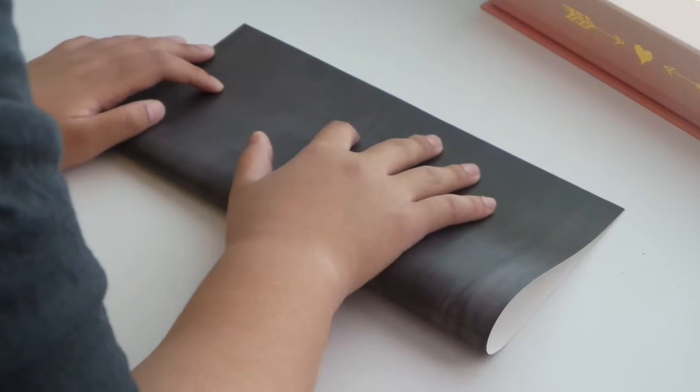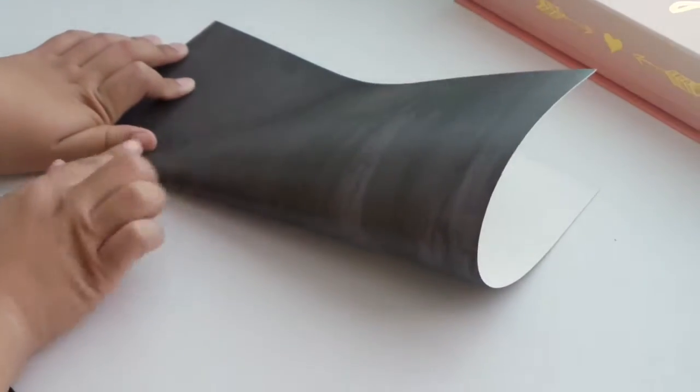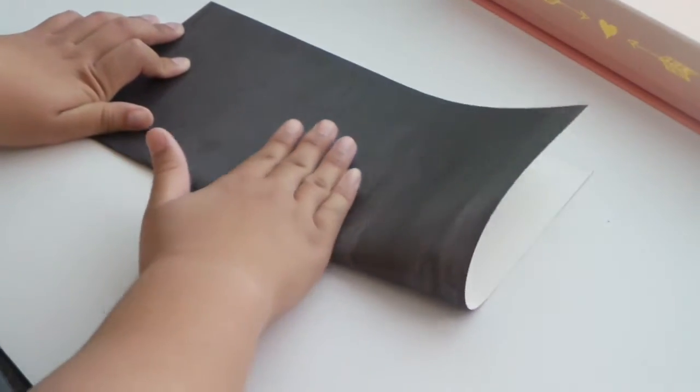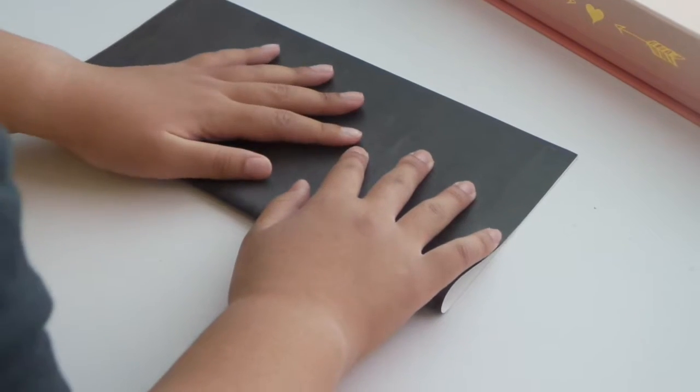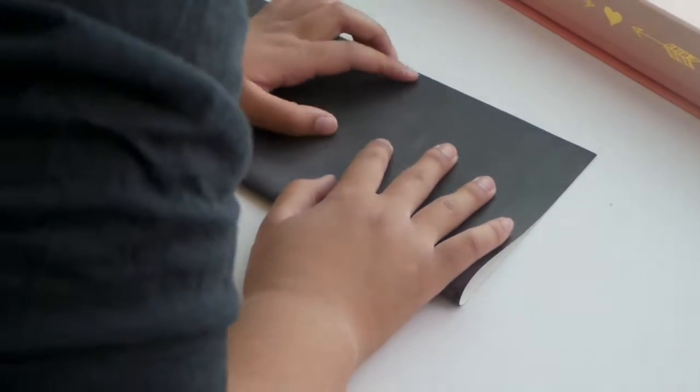I start off by folding a 12 by 12 inch paper pad that I got from Michaels. I chose a dark color scheme because I'm making this for a dude, but I'm sure other girls, including myself, would really like this color scheme as well.